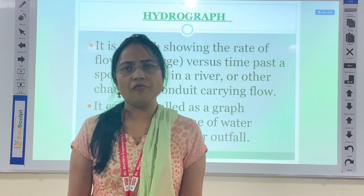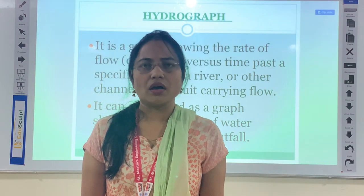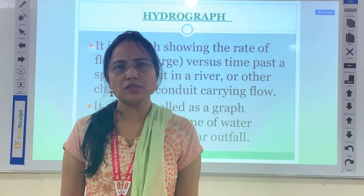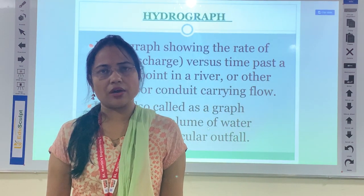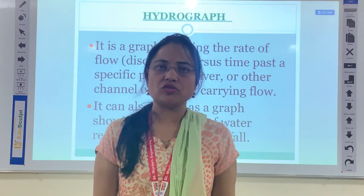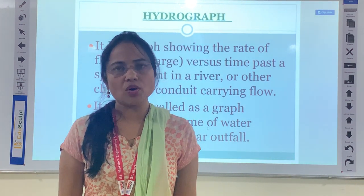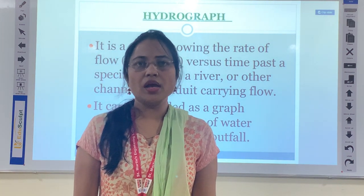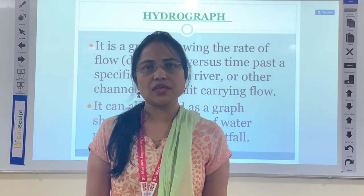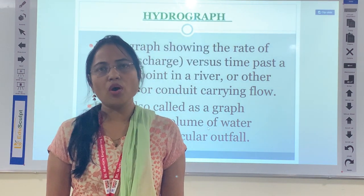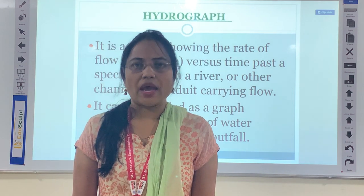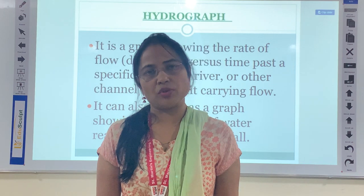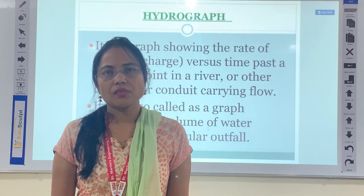We need to estimate these components either instrumentally or numerically, and there are various methods available. For example, to calculate the average depth of precipitation over a catchment, there are three methods: the arithmetic method, the Thiessen polygon method, and the isohyetal method. To manually measure rainfall, rain gauges and rain gauge networks are used. There are also graphical methods to determine the average depth of rainfall over a catchment.